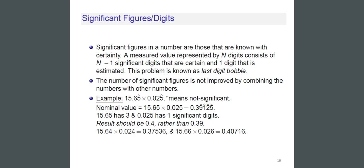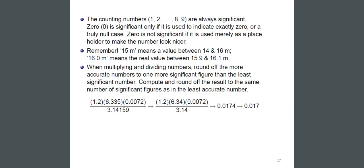But 15.64 × 0.024 = 0.37536 and 15.66 × 0.026 = 0.40716. The counting numbers 1–9 are always significant. Zero is significant only if it indicates exactly zero or a truly null value; zero is not significant if it is used merely as a placeholder. Remember: 15 m means a value between 14 and 16 m, while 16.0 m means the real value between 15.9 and 16.1 m.